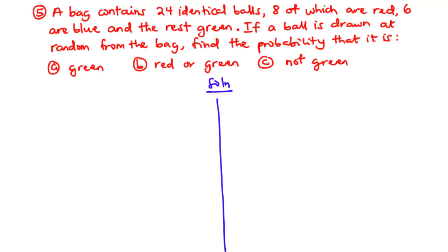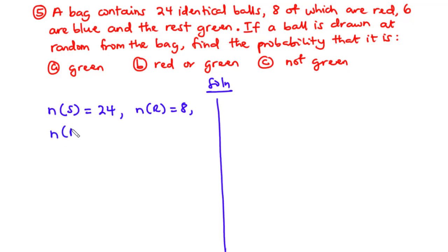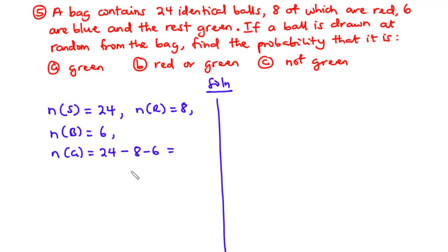We have 24 identical balls, which means the number of elements in our sample space is 24. We are told that eight of the balls are red, so the number of red balls is 8. The number of blue balls is 6. The rest are green, so the number of green balls equals the total minus red minus blue: 24 minus 8 minus 6, which equals 10. Therefore the number of green balls is 10.